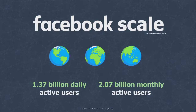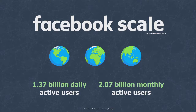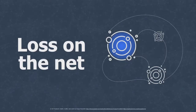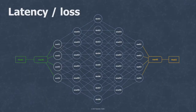I always tend to put this on the presentations because it helps people understand some of the challenges that we have to deal with when they realize what's our scale. These are numbers that are recent as of a couple of weeks ago. We have 1.37 billion daily active users, and we have a little over 2 billion monthly active users. So the size of our network and the scale challenges tend to be very interesting.